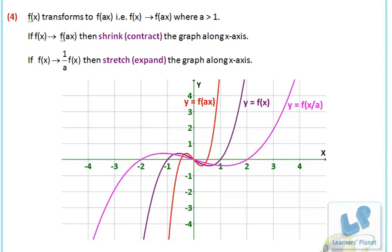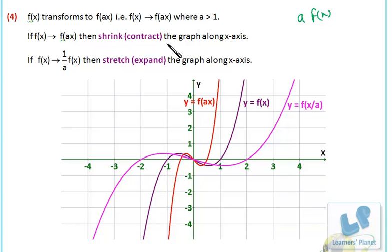Now we see when f(x) transforms to f(ax). In the previous case we discussed a·f(x); in this case it is f(ax). When a is greater than 1, the graph shrinks along the x-axis. We can see the graph of f(x), then f(ax), and then f(x/a) — in both scaling cases a is greater than 1.